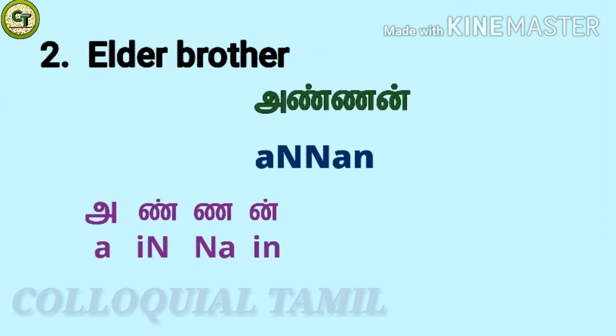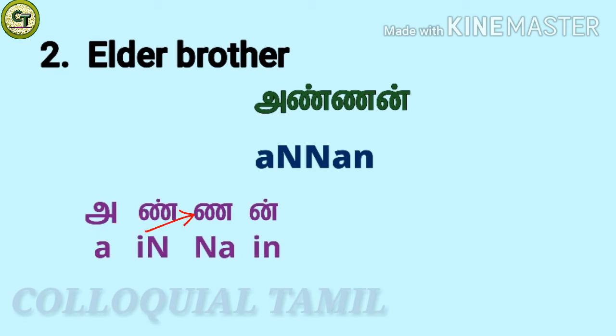For elder brother: annan. A short vowel 'a', consonant 'n', consonant 'n', consonant 'a' — together: annan.